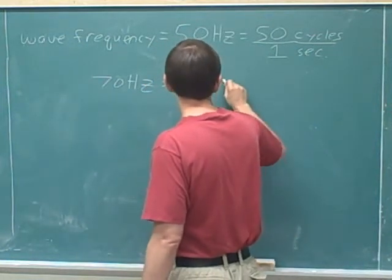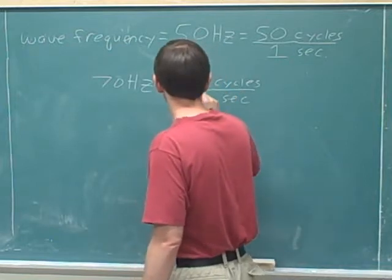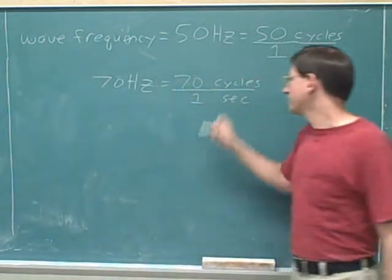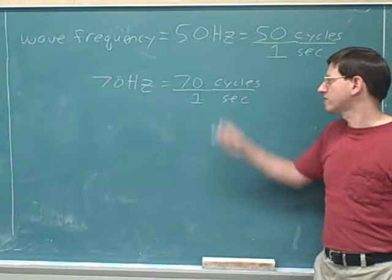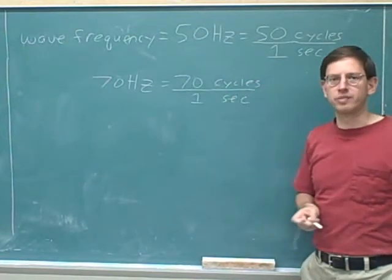Well, we just learned that hertz is cycles per second. So that means that in one second, the wave goes through 70 cycles. Or that in one second, 70 waves are accomplished.